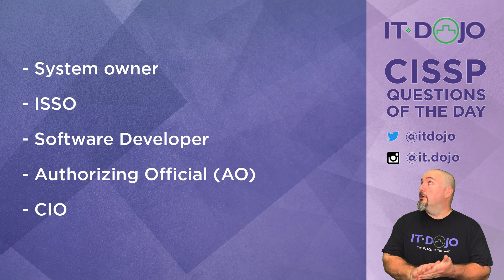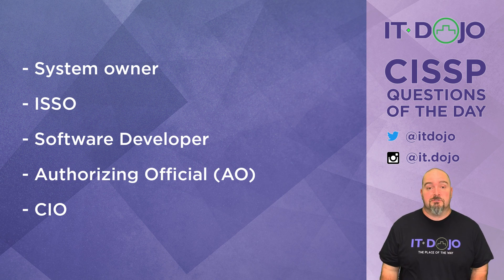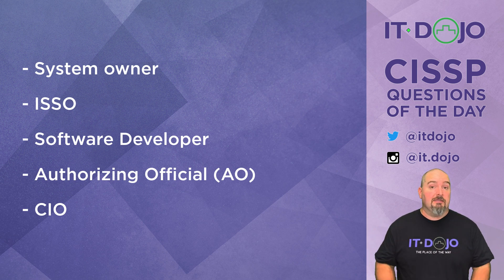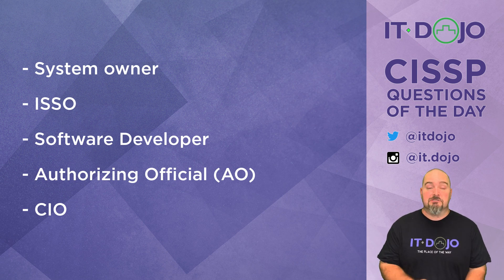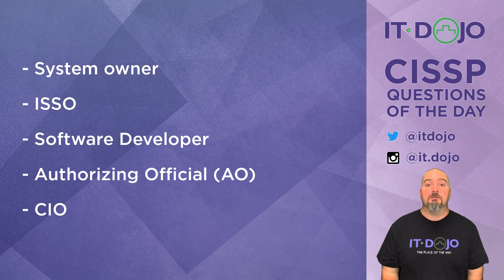Is it the system owner? No. The system owner is not responsible for accepting the risk. The system owner is responsible for making sure that the stuff gets procured, developed, implemented, and is actually used, maintained, and operated in the environment — but the system owner is not responsible for accepting the risk associated with it being in the environment.